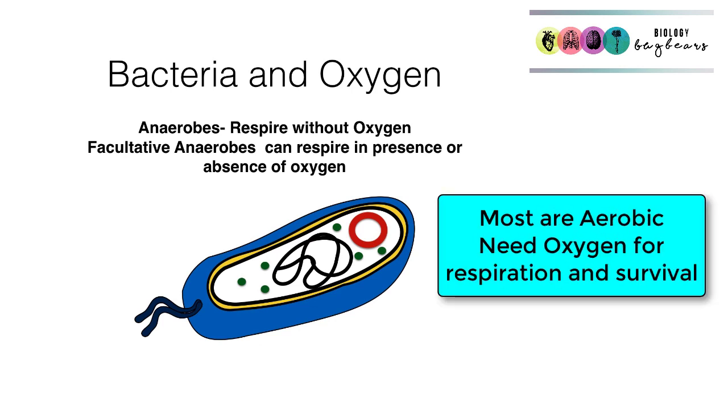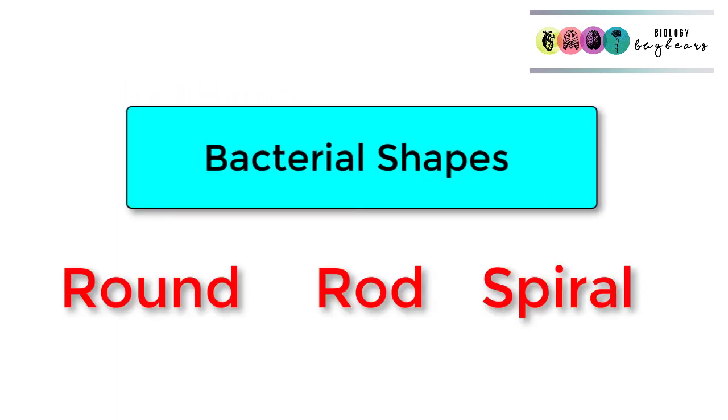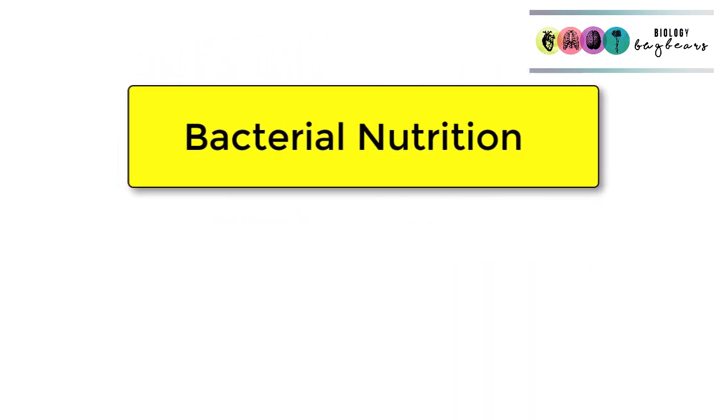Most bacteria are aerobic and need oxygen for respiration and survival. There are three shapes associated with bacteria: round, rod, and spiral. You'll be amazed at how often that question gets asked. What about bacterial nutrition? How do they get their food?